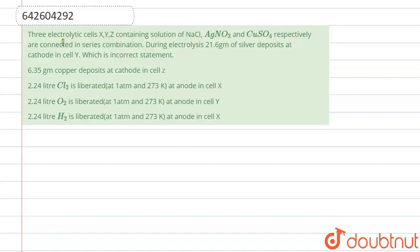The question given here is: three electrolytic cells X, Y, Z containing solution of NaCl, AgNO3, and CuSO4 respectively are connected in series combination. During electrolysis, 21.6 gram of silver deposits at cathode in cell Y. We have to find the incorrect statement from these four.